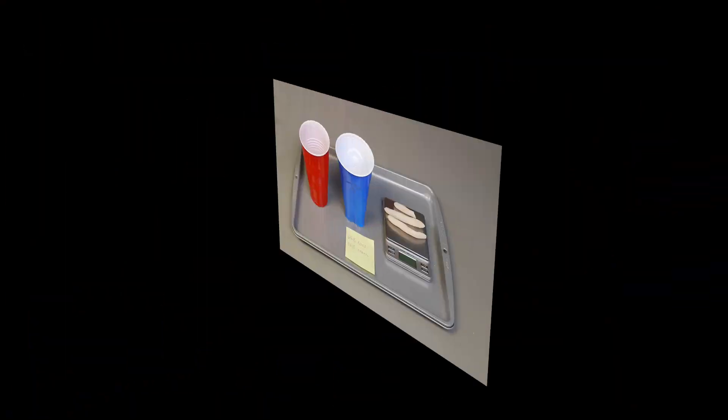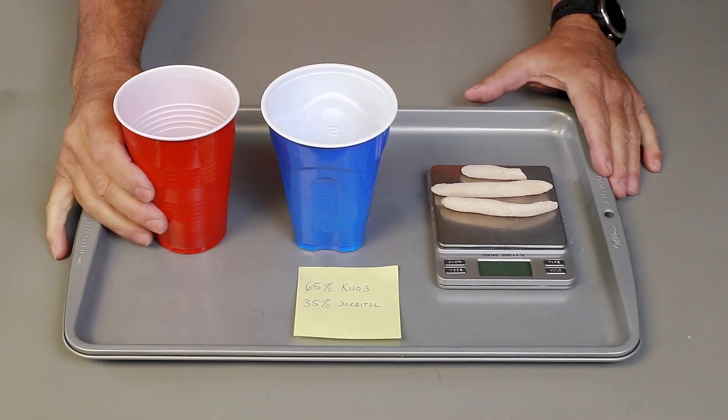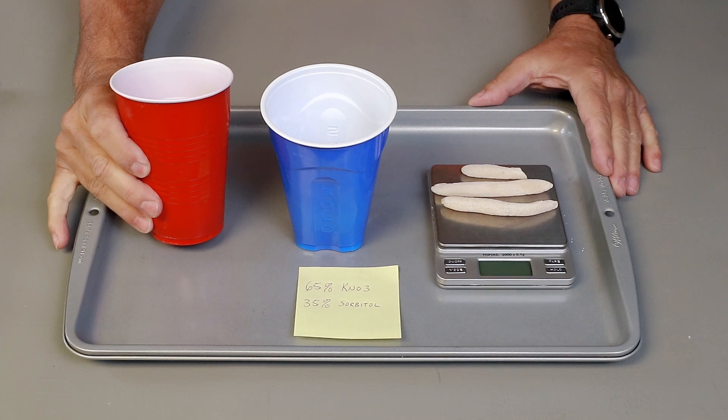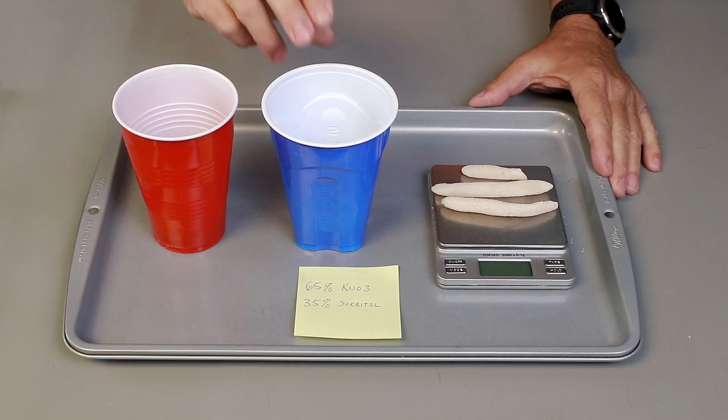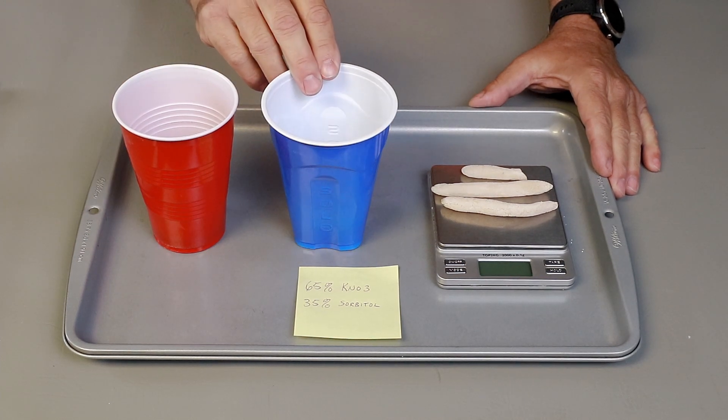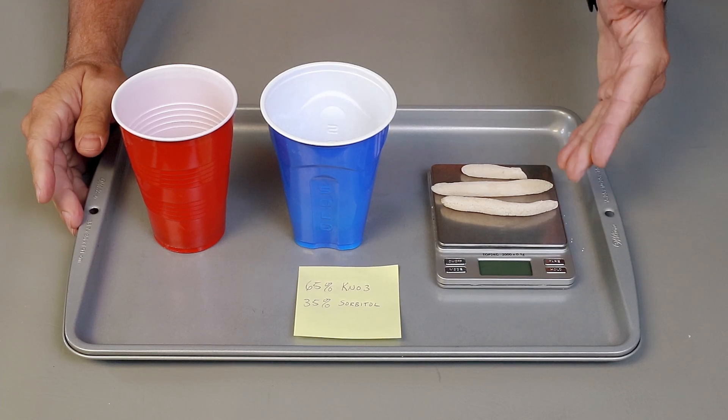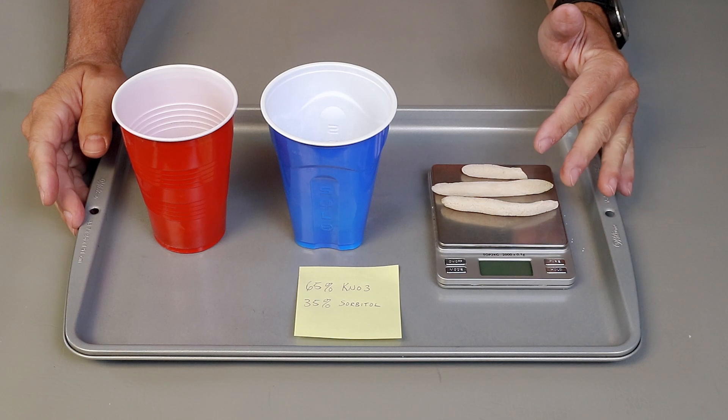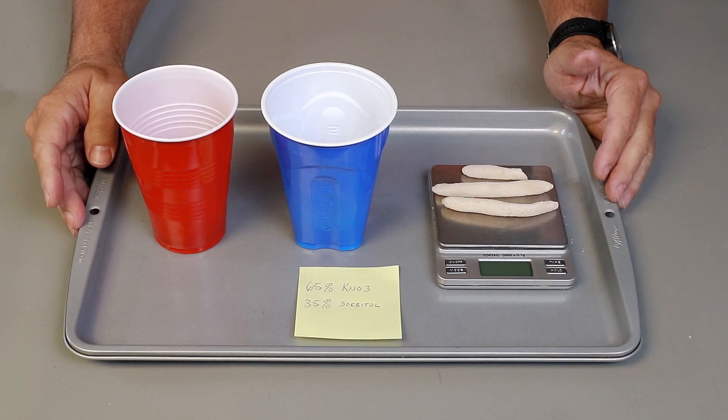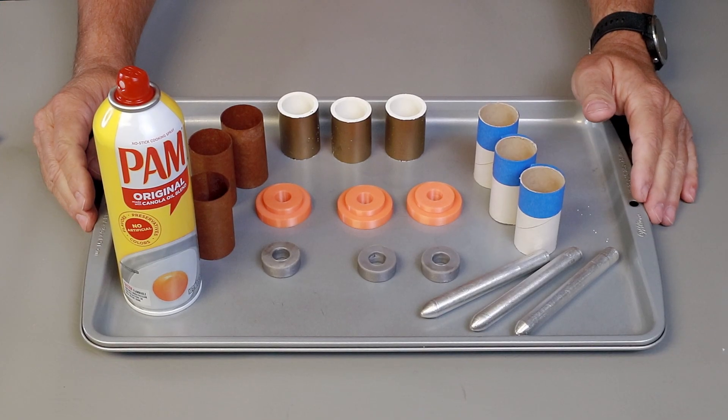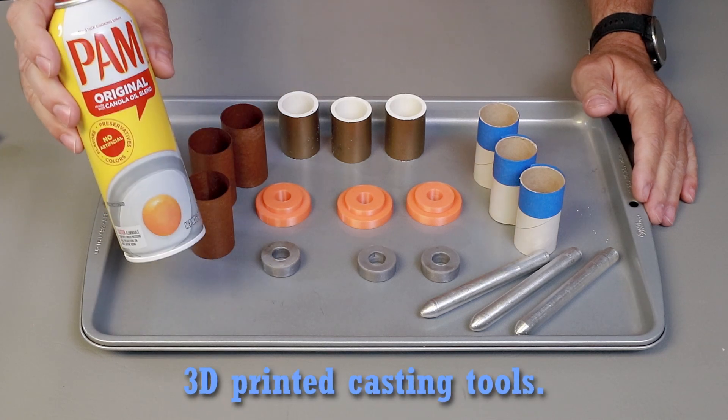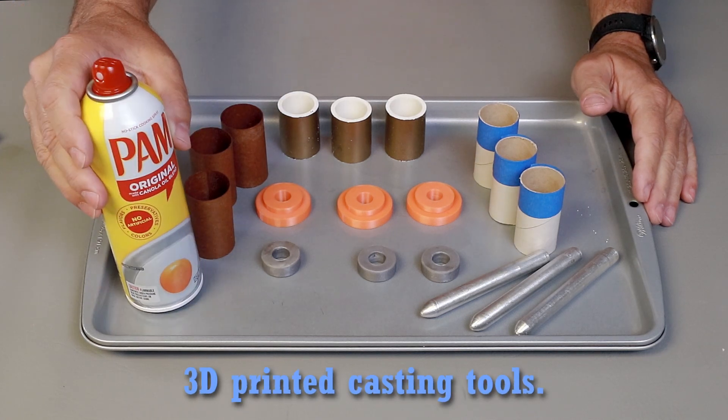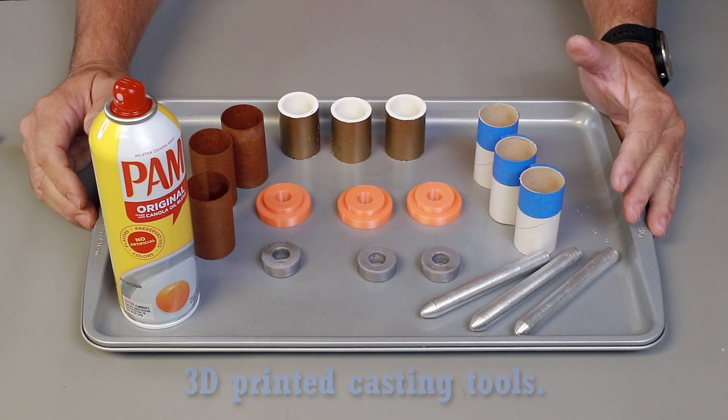So let's gather some materials and start our tutorial. I have the traditional 65% KNO3 or potassium nitrate and 35% sorbitol already weighed out. Make sure you use an accurate scale. Don't guess on any of this. I have some leftover fuel. I'm just going to toss that in the pan. I have all our casting tools set up. Make sure you give everything a good coating of cooking spray and that will help keep the sorbitol from sticking so bad.